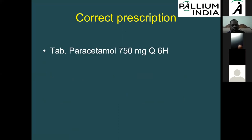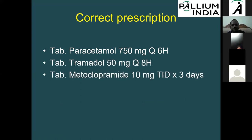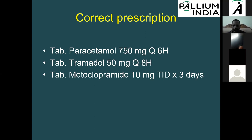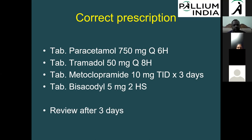The correct prescription for this patient is: paracetamol 750 mg 6-hourly, tramadol 50 mg 8-hourly, metoclopramide 10 mg three times daily for three days, and bisacodyl as a stimulant laxative. Opioid-induced nausea and vomiting typically occurs only for the first few days — about three to five days — after which the body adjusts. That's why the anti-emetic is prescribed for only three days. Review the patient after three days.